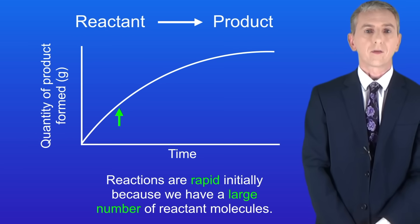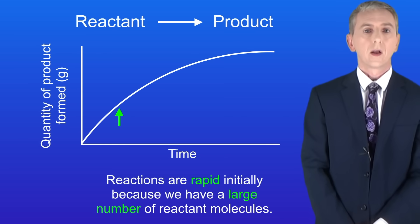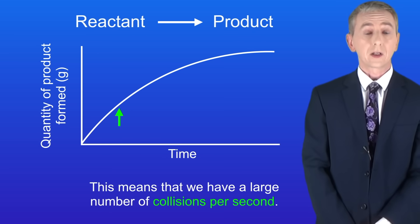Going back to our graph we can explain the shape using collision theory. Reactions are rapid initially because we've got a large number of reactant molecules. This means that we've got a large number of collisions per second.